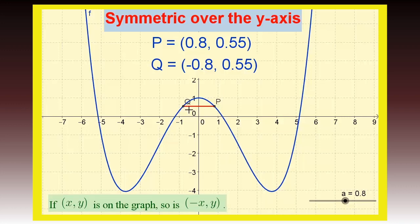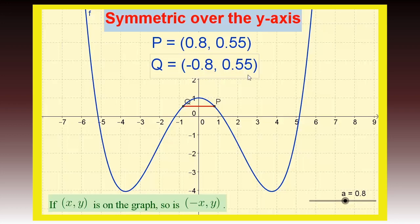Here are the points Q and P. The coordinates of P and Q right now are 0.8 and 0.55, and then negative 0.8 and positive 0.55. So the only thing that's different are the x values — they are opposites of each other.